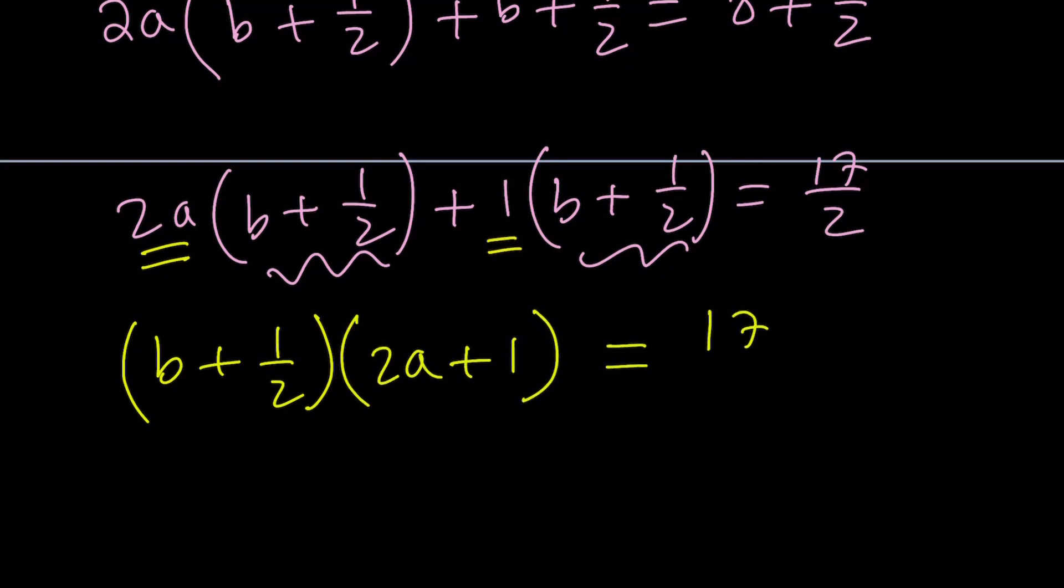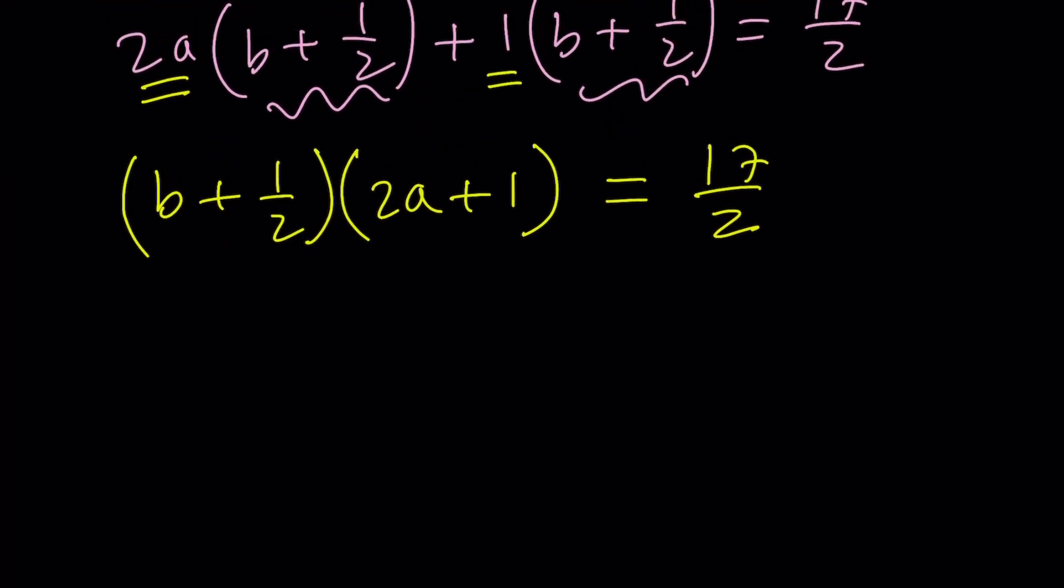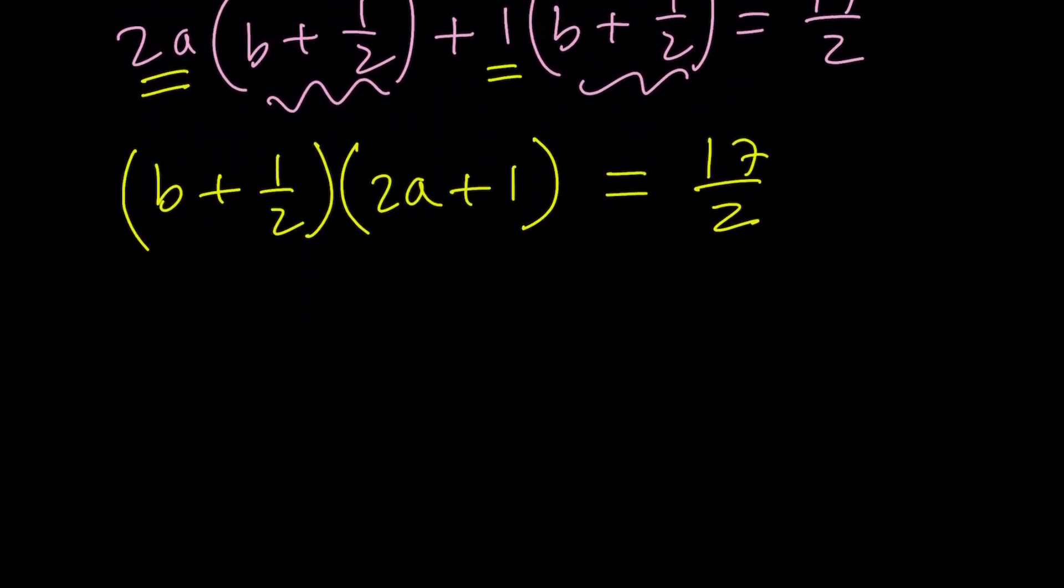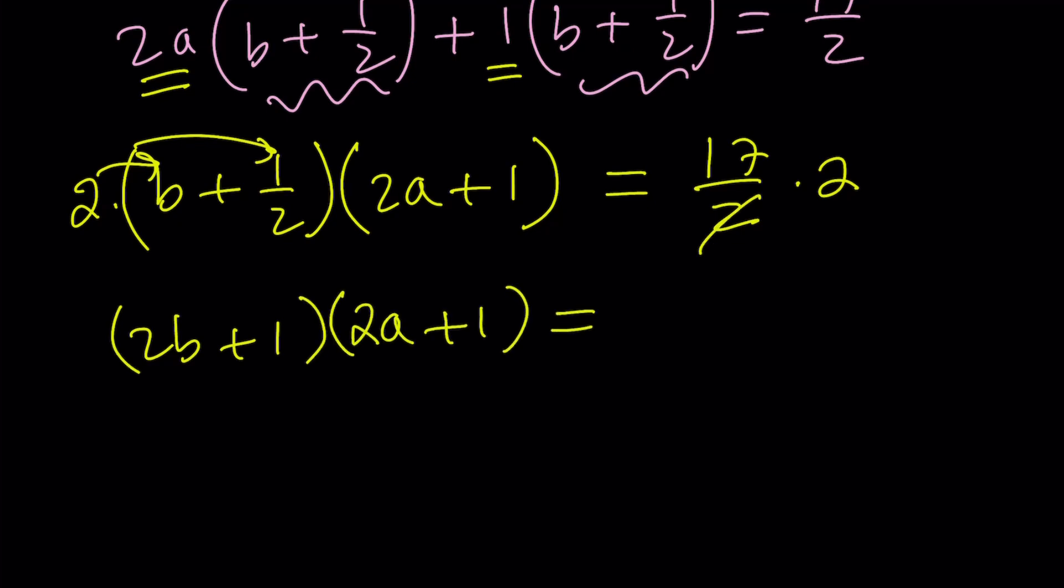So this concludes the factoring part. But the issue is we have a b and 1 half, but we have a 2a here. So they're not really kind of compatible. So let's go ahead and multiply both sides by 2. So the presence of a fraction on the right-hand side also gives you a clue. Multiplying both sides by 2 is a good idea. And if you go ahead and distribute the 2 here, you get 2b plus 1 multiplied by 2a plus 1 equals 17.